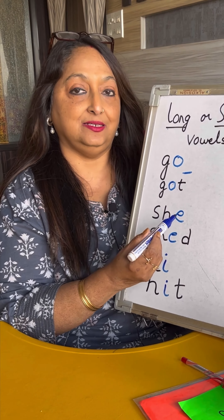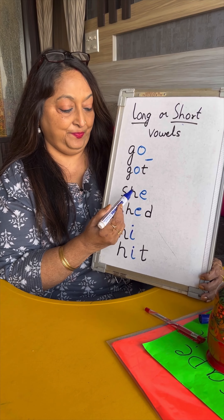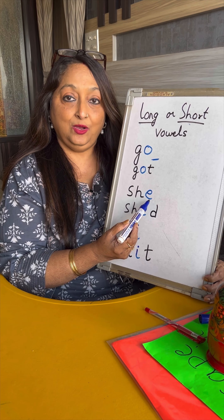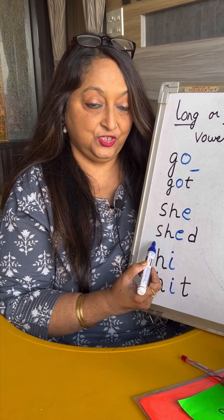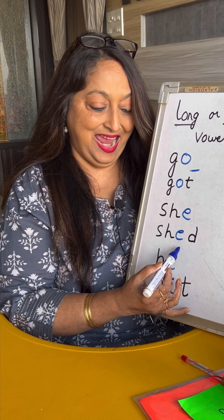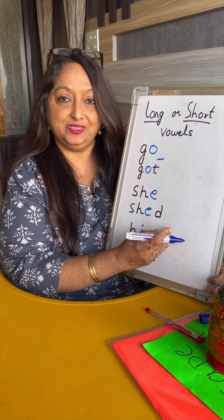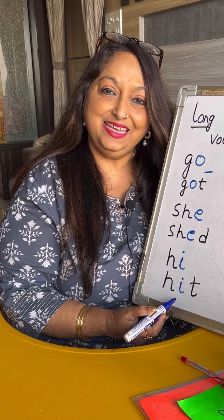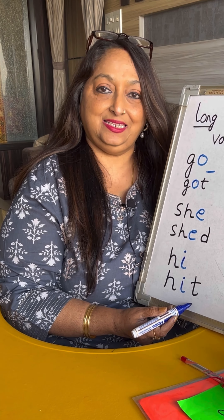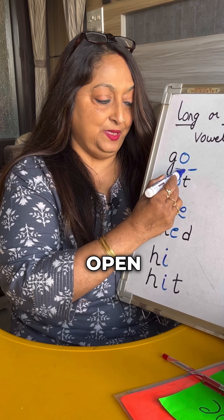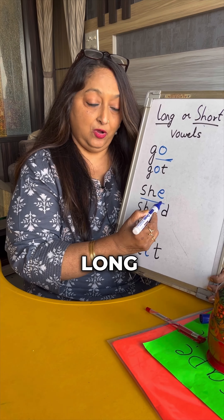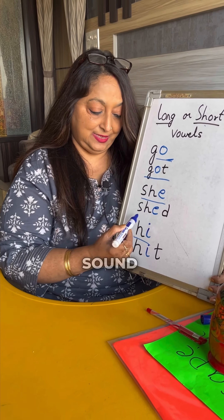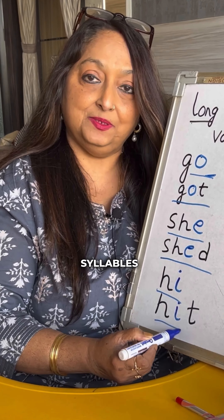G-O-T, GOT. Similarly, S-H-E — open syllable. S-H-E-D — closed syllable. So these are open syllables with a long sound, and these are short sound closed syllables.